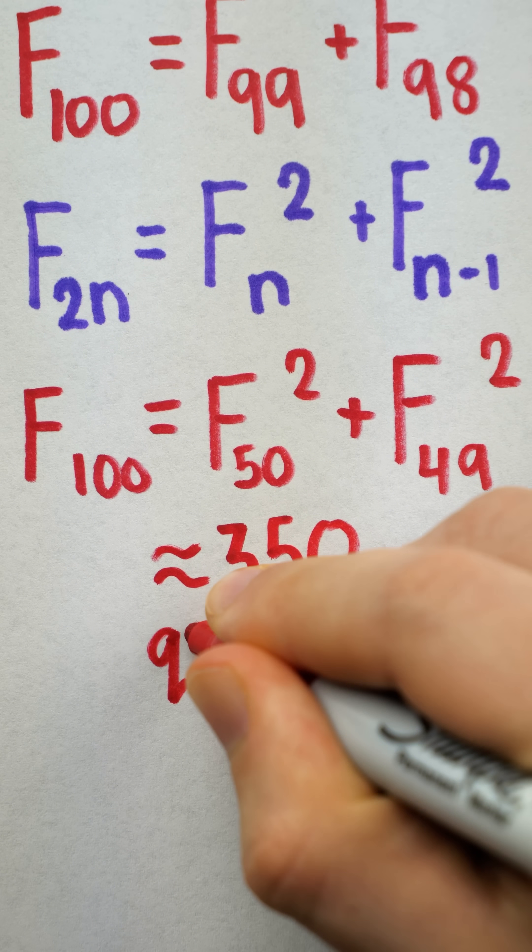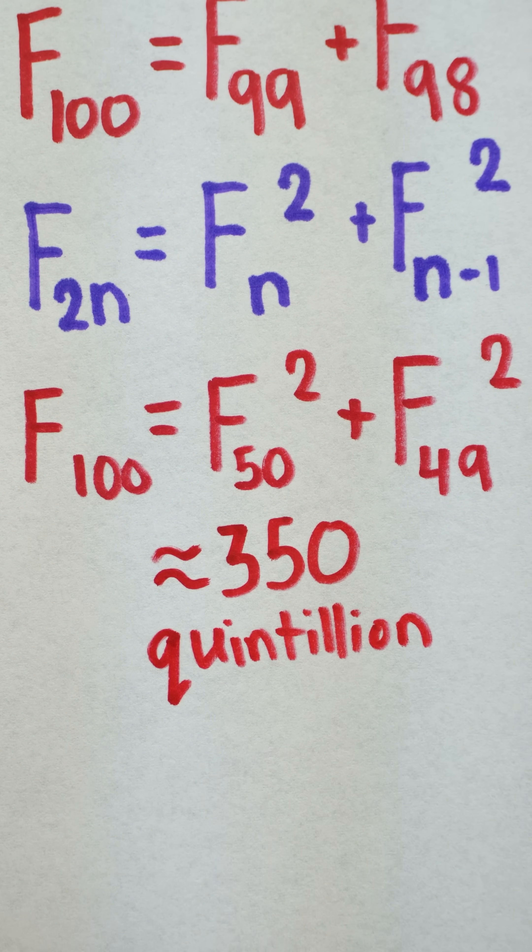I'd write these numbers out for you, but they're gargantuan. F100 is about 350 quintillion.